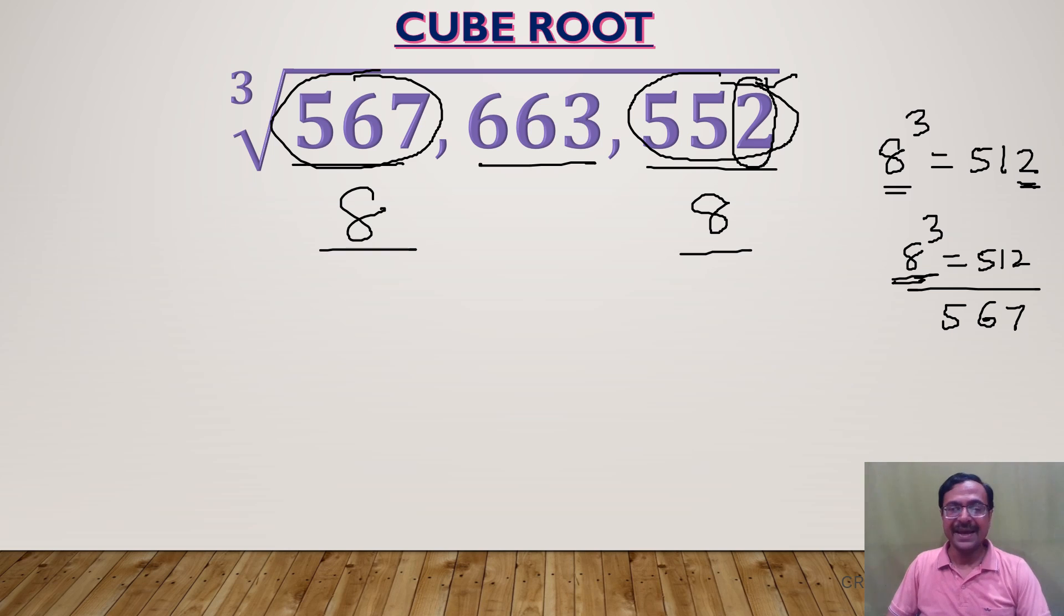Now the middle part. I have to find the middle part. What did I tell you? The last triplet is 552 and the number I chose here is 8. How much is 8 cube? 512. So 512 comes here.